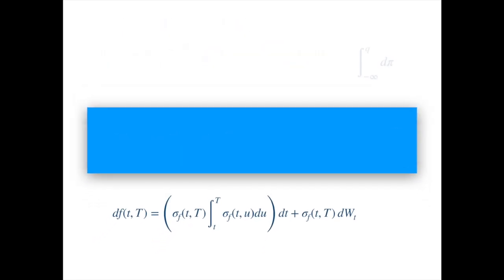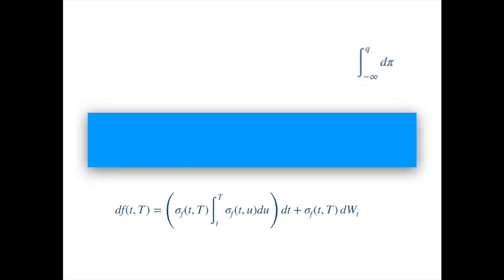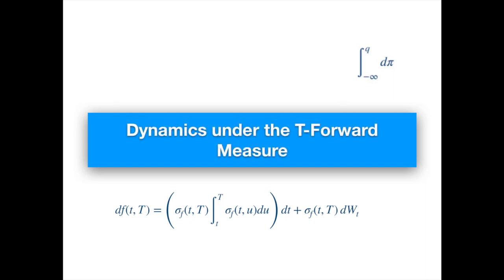Now that we have the dynamics under the risk neutral measure, let's translate these into the dynamics under the forward measure. The probability measure manifests itself through the Brownian, so this W here has the properties of the Brownian under the risk neutral measure. When you change the probability measure you are re-weighting the probabilities, so the Brownian under the new probability measure will be a different process. The main game is to establish the connection between the two, and once we have done that we can substitute the new Brownian for the old. This is a classic exercise using the change of numeraire approach.